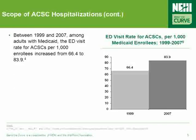In addition, between 1999 and 2007, among adults on Medicaid, the ED visit rate for ambulatory care sensitive conditions per 1,000 enrollees increased from 66.4 to 83.9 — a percentage increase of over 25%.